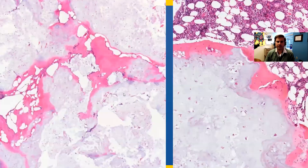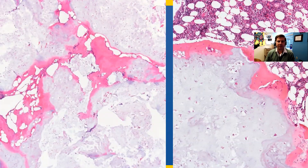Tissue is obtained. Here we have an intermediate power view showing a hyaline cartilage neoplasm that is low-grade. The cells of interest are small, condensed, and lymphocyte-like. They are fairly evenly spaced out, and the periphery of the hyaline cartilage neoplasm is ossified.